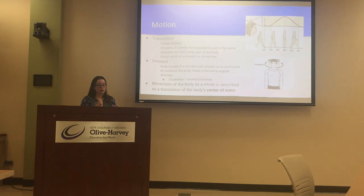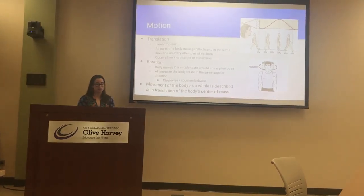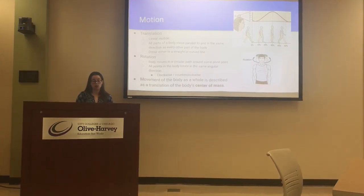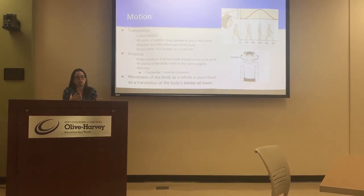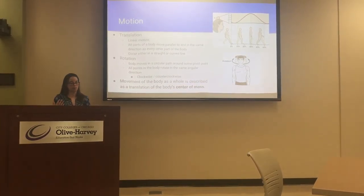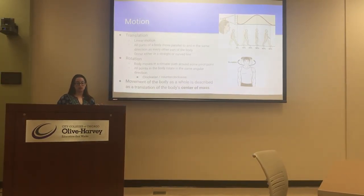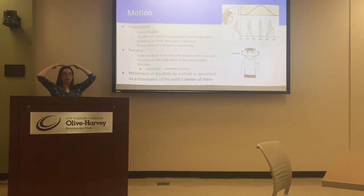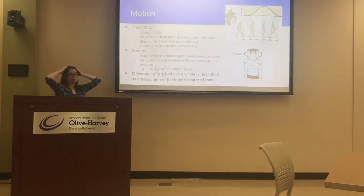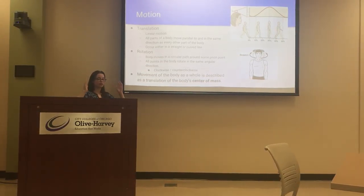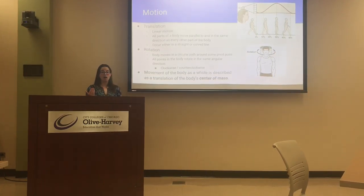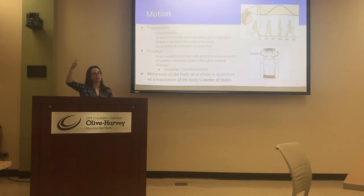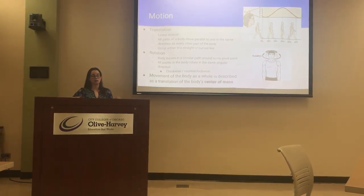For linear motion, all parts of the body are going to move parallel to and in the same direction as every other part of the body, occurring either in a straight line or in a curved line. As we move, our head ever so slightly moves down, and as we stand back up it goes up, so while in general it has linear motion, it does follow this curved line path. Whereas rotation — the body moves in a circular path around some pivot point.